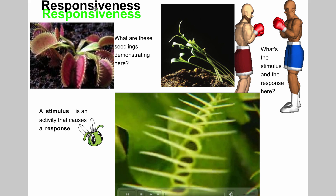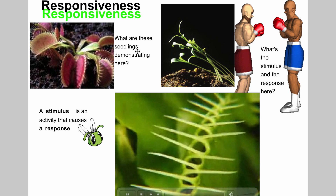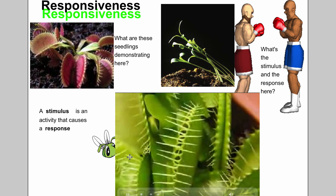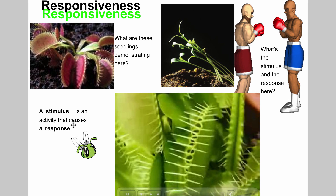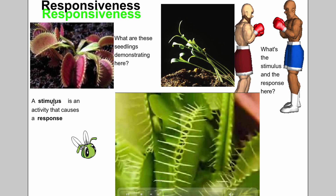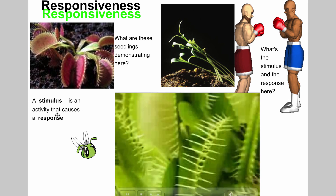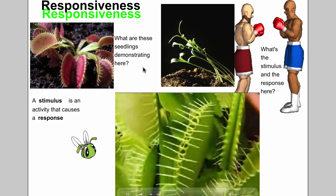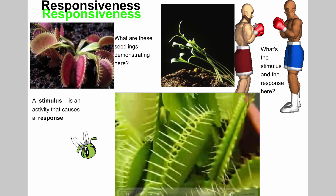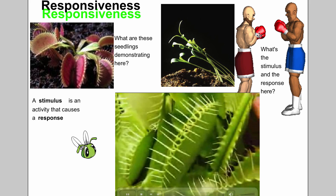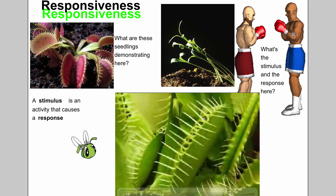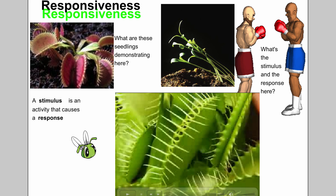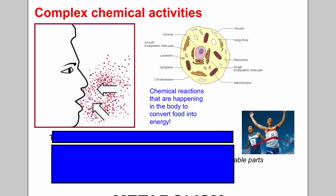Responsiveness — living things respond in some way. That plant responded. A stimulus is an activity that causes a response. These plants are growing towards the light — that's a response. Living things demonstrate stimulus and response.